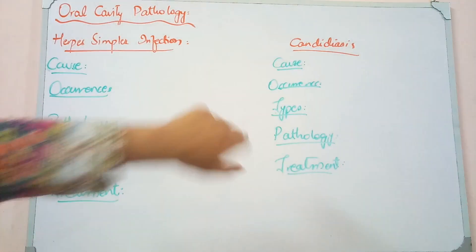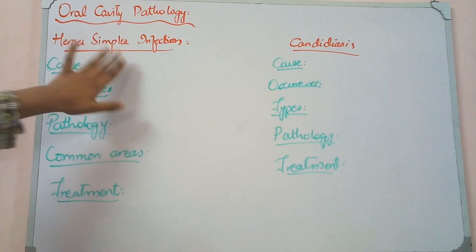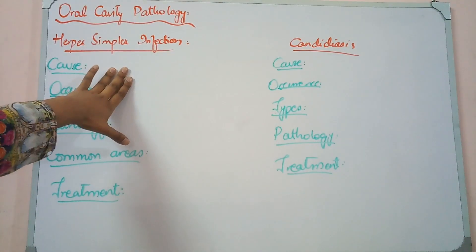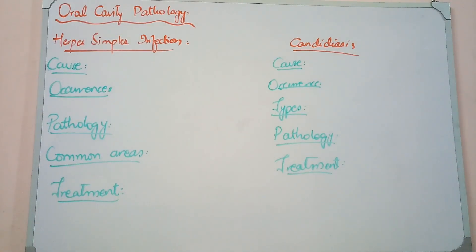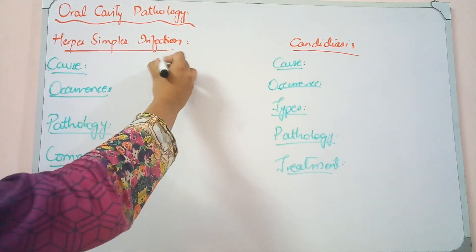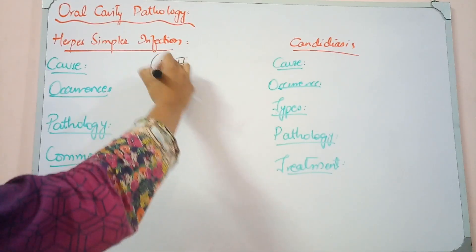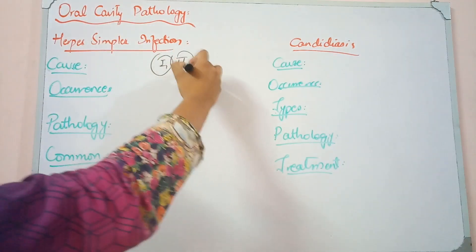This involves a virus and a fungus. The herpes simplex virus causes vesicles which are fluid-filled and then rupture. Once entered into the body it causes a primary infection. There are two types: type 1 is mainly oral and facial area, and type 2 is mainly the genital area.